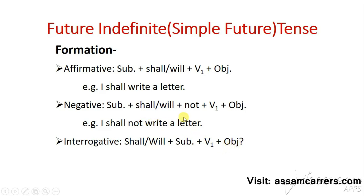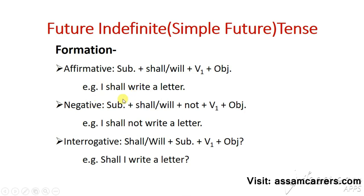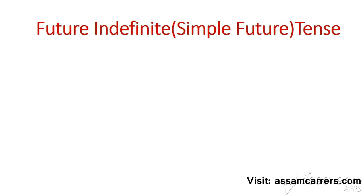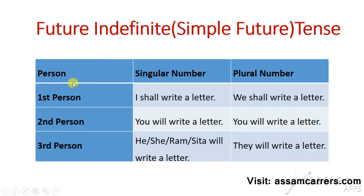The next type is the interrogative formation — same structure with the subject. For example: 'I will write a letter.' There are some examples you can see. Let us look at persons: the first person, second person, and third person.